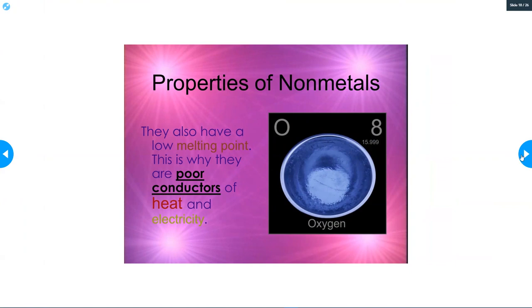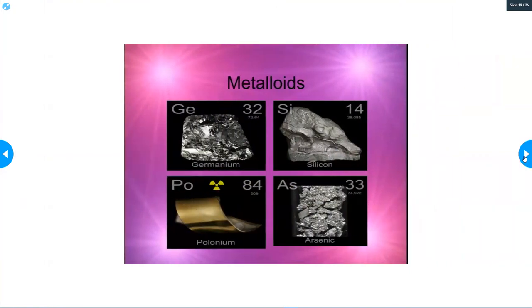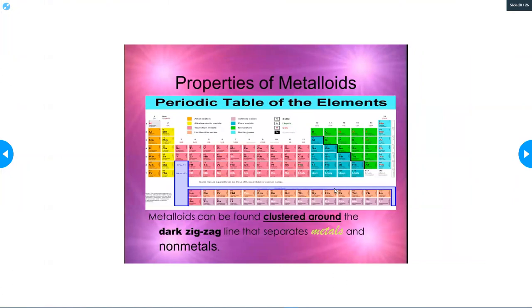Nonmetals are the exact opposite of metals. Metalloids are kind of weird because they hold a lot of the same properties as metals and nonmetals. They are going to be on this stair step here, so they're going to be silicon, germanium - they go on the zigzag line.